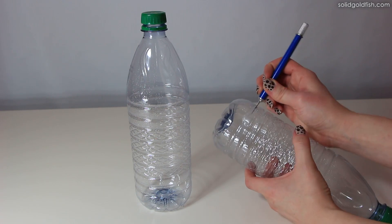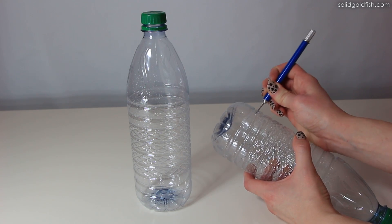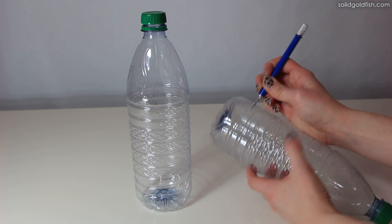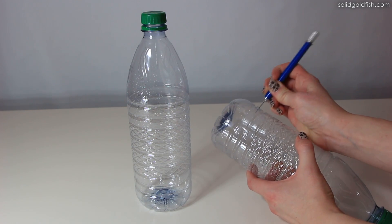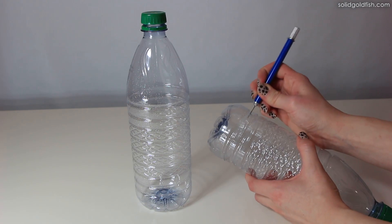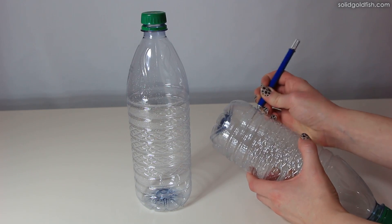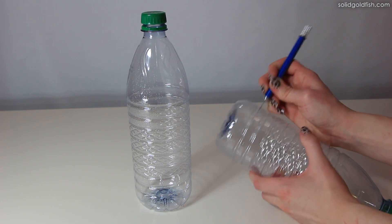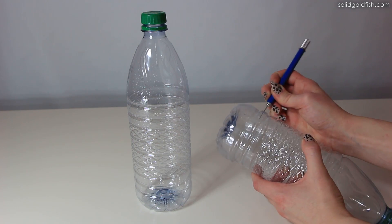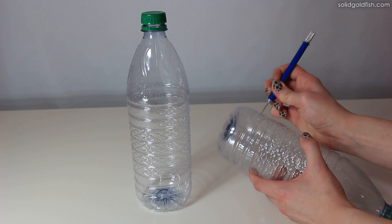First, carefully cut the bottom one to two inches off of one bottle and discard the bottom piece. This will be inverted to become the reservoir to hatch the brine shrimp in. Brine shrimp hatch best when they're continuously circulating, so the inverted bottle is a good shape because there's no bottom surface for the shrimp eggs to settle on.